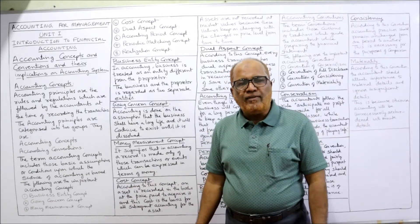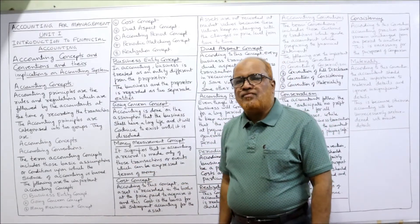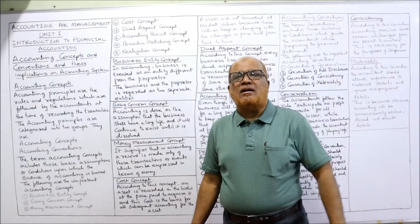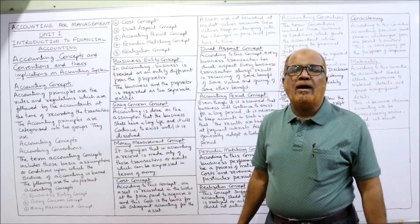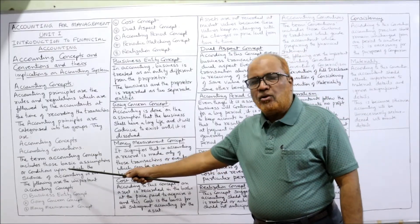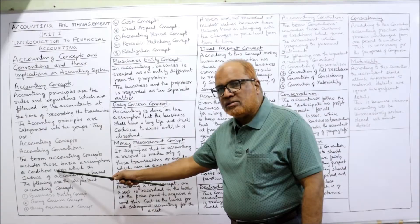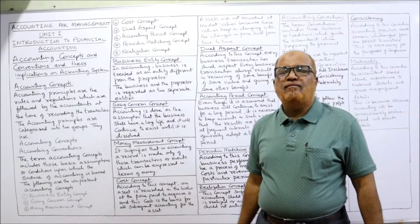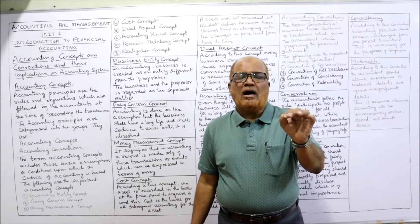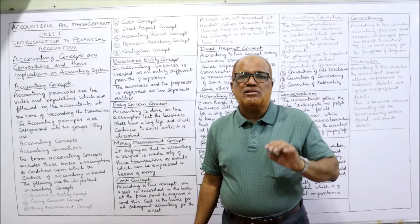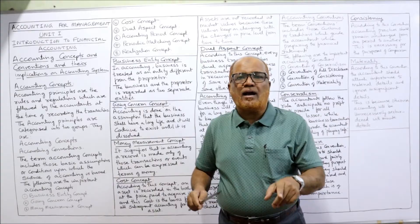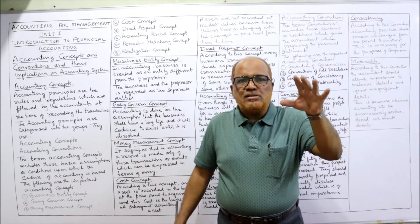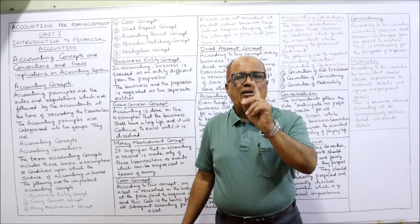Accounting principles are generally categorized into two: accounting concepts and accounting conventions. The term accounting concepts includes those basic assumptions or conditions upon which the science of accounting is based. The complete accounting structure is based on those assumptions, and those assumptions are called accounting concepts.